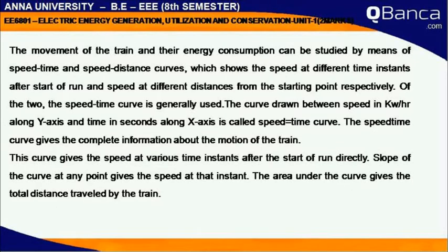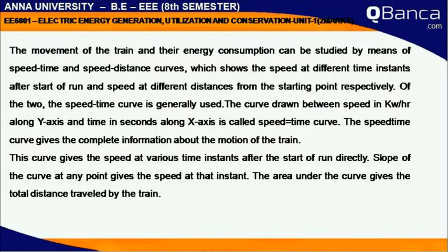Of the two, the speed-time curve is generally used. The curve drawn between speed in km per hour along the y-axis and time in seconds along the x-axis is called the speed-time curve. The speed-time curve gives the complete information about the motion of the train.